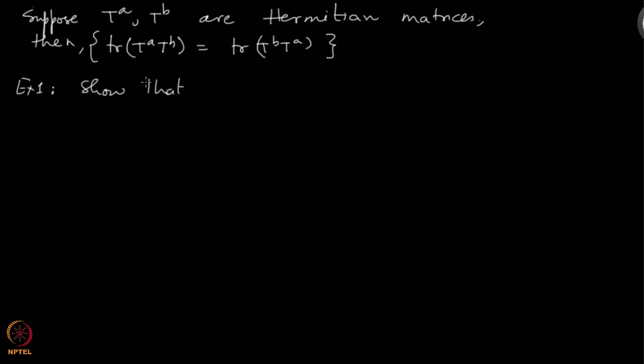Exercise number 1: Show that trace of T_A T_B, this matrix that you have, is a real symmetric matrix. Because you can interchange A and B and you do not get a different thing, you get the same thing. It is symmetric, but the thing that you have to show is that this matrix is real.